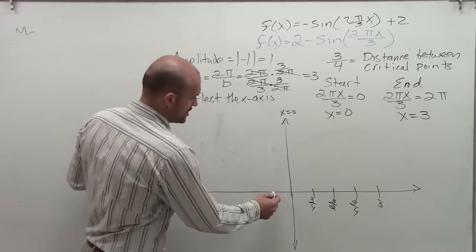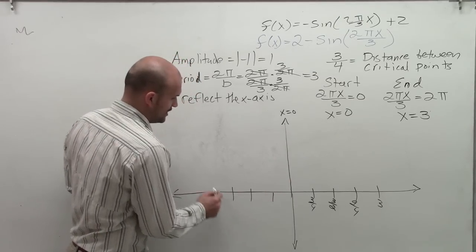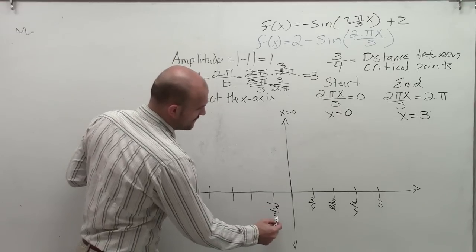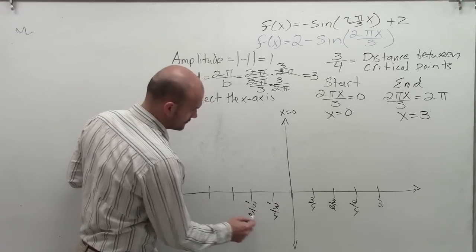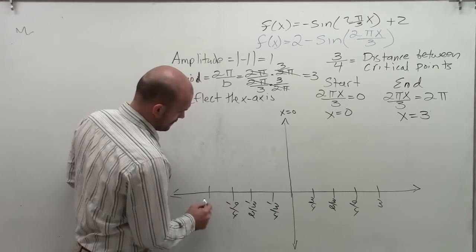I can also do that in the negative direction, negative 1, 2, 3, 4. And I'm going to have the exact same values just as negative.